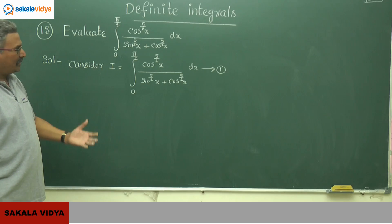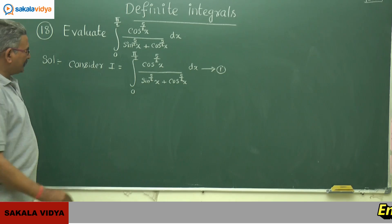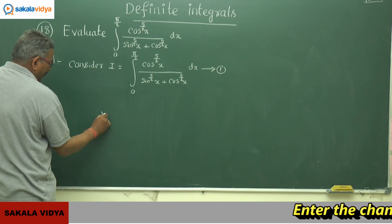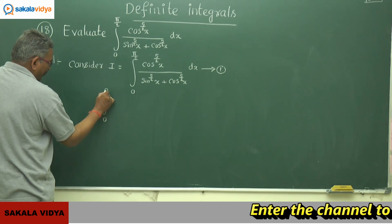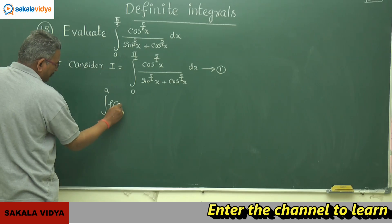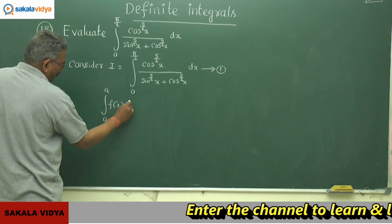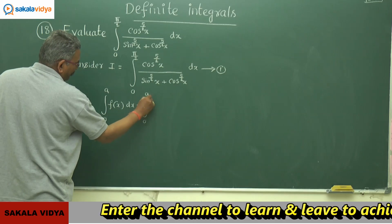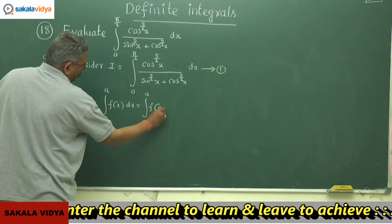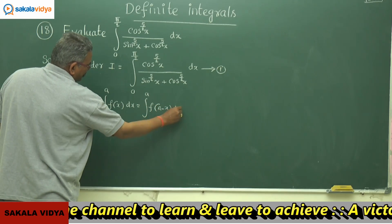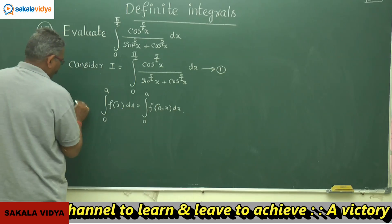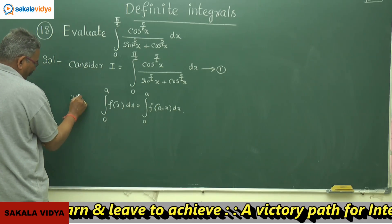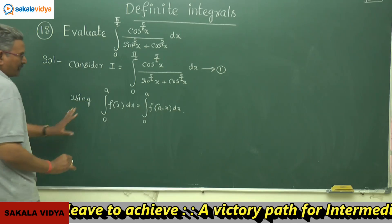Let us make use of the property: the integral from 0 to a of f(x) dx equals the integral from 0 to a of f(a − x) dx. Using this property, equation 1 can be rewritten.